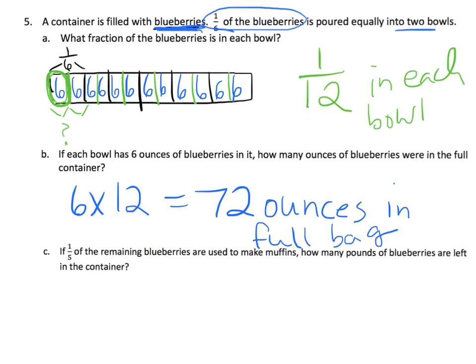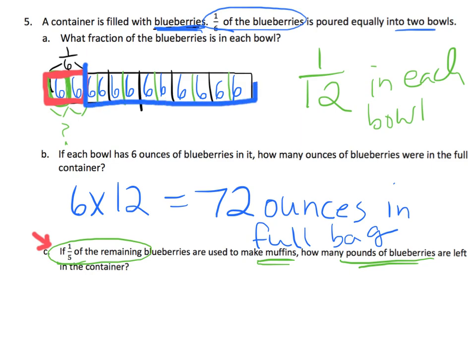The last part says: if one-fifth of the remaining blueberries are used to make muffins, how many pounds of blueberries are left in the container? This has a variety of steps. We've got to go back — we know that one-sixth was split up into those two bowls. So the remaining blueberries are everything else. If I count those pieces — one, two, three, four, five, six, seven, eight, nine, ten — that's ten pieces at six ounces each, so six times ten is sixty ounces.